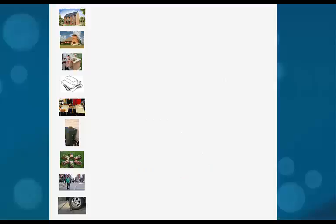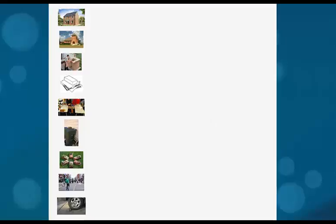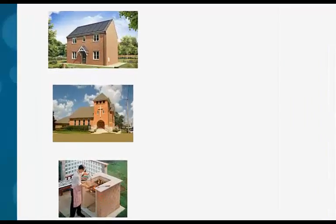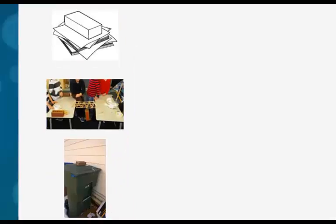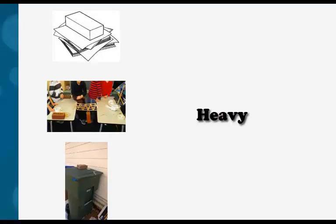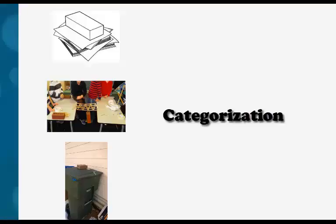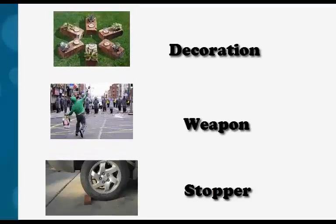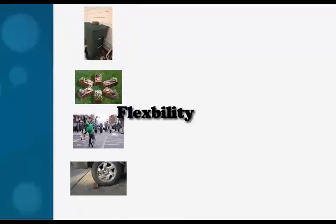A third Divergent Thinking score often used in the test is flexibility, meaning the number of conceptual categories you can come up with. In this example, house, church, and brick barbecue all belong to the building category. And when you use a brick as a paperweight, to pass a bridge weight test, or to put on a garbage bin, you consider it as something that is heavy — so we may put these three uses into one category. Categorization can be quite subjective, and the rest of the uses belong to three different categories. So you get a flexibility score of five.